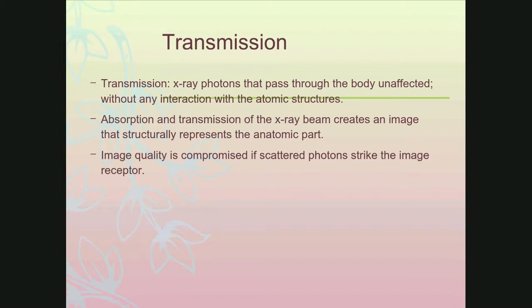Transmission is the third thing that photon can do — it can photoelectrically absorb, Compton scatter, or transmit, meaning that photon just blows right through the part with no loss in energy and no change in direction. It continues right through the part directly to the image receptor. Typically your absorption and your transmission is what creates your image that represents the anatomy it's passed through. Scatter does not image anatomy, so only transmission and absorption actually create the image.